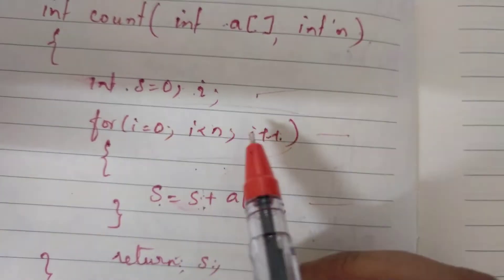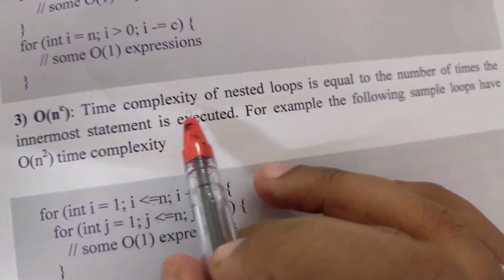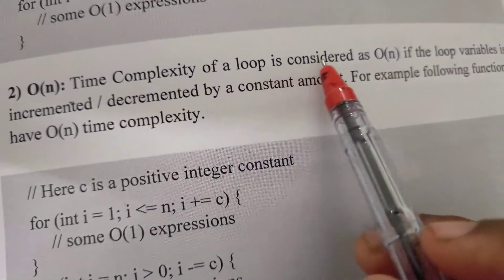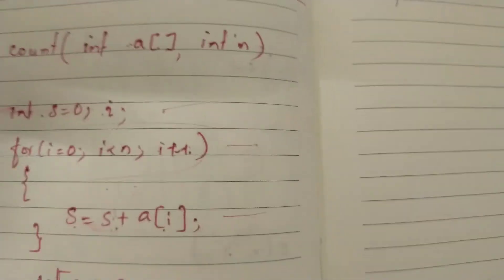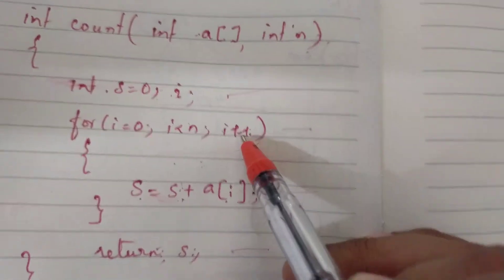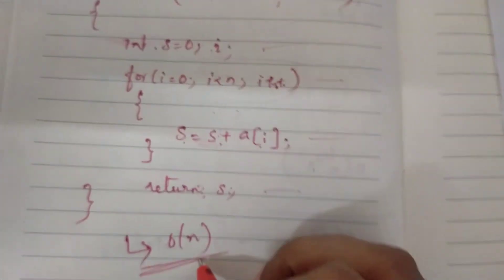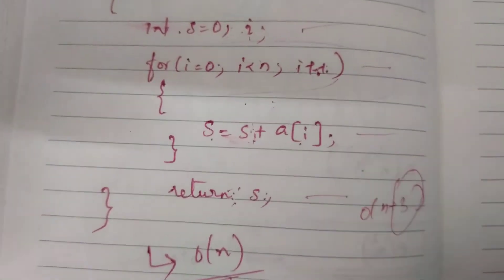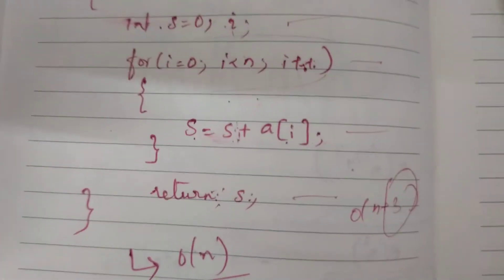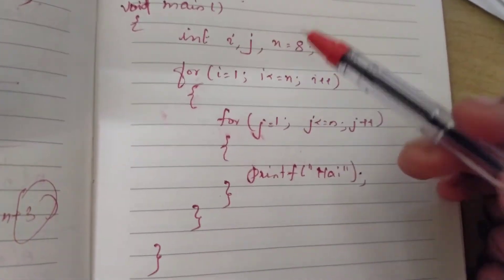The loop variable is incremented by a constant amount of time and there is no multiplication or division, so here we are going to have the complexity of order of n. The order of n plus constant extra time gives us overall order of n as the time complexity of this code, including the main function, declaration statement, assignment statement, and control statement.